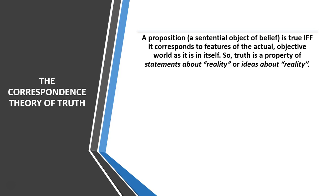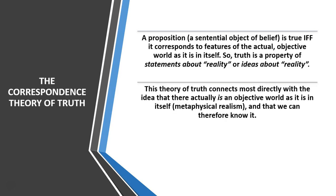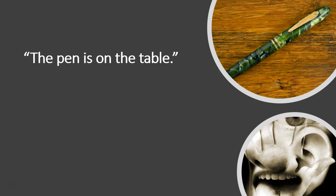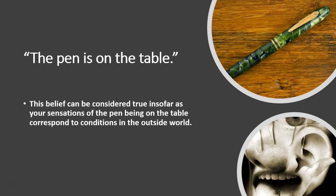So truth is a property of statements about reality or ideas about reality. This is our most common understanding of what it means for a sentence or proposition to be true. This theory connects most directly with the idea that there actually is an objective world as it is in itself — known as metaphysical realism — and that we can therefore know it. Under this theory, truth is seen as a mental content to objective world relation. For instance, you could say 'the pen is on the table' — this belief can be considered true insofar as your sensations of the pen being on the table correspond to conditions in the outside world.